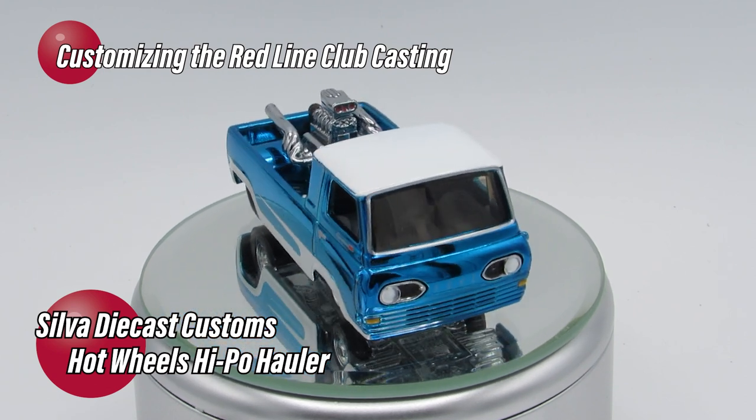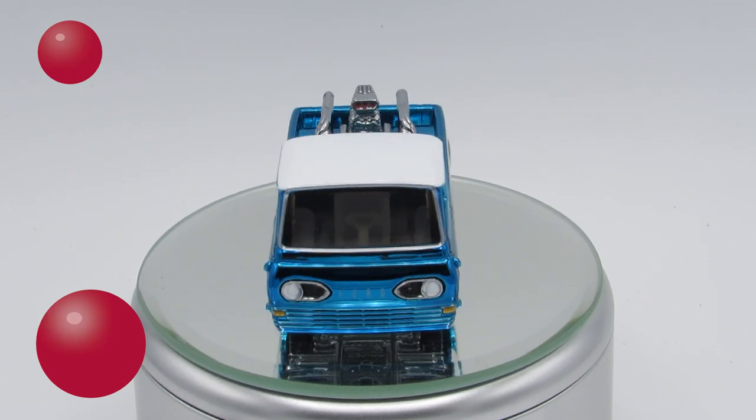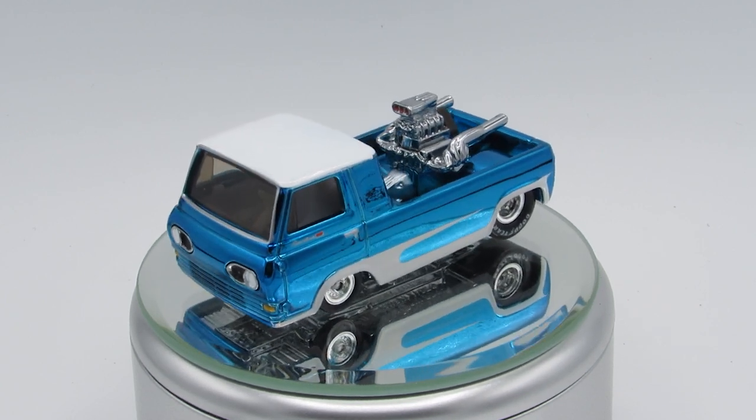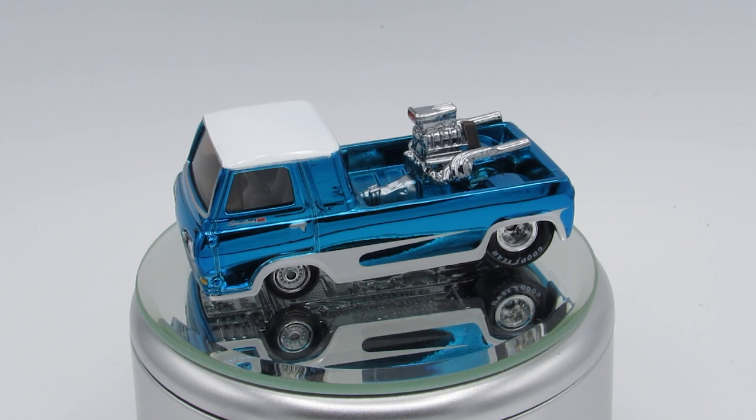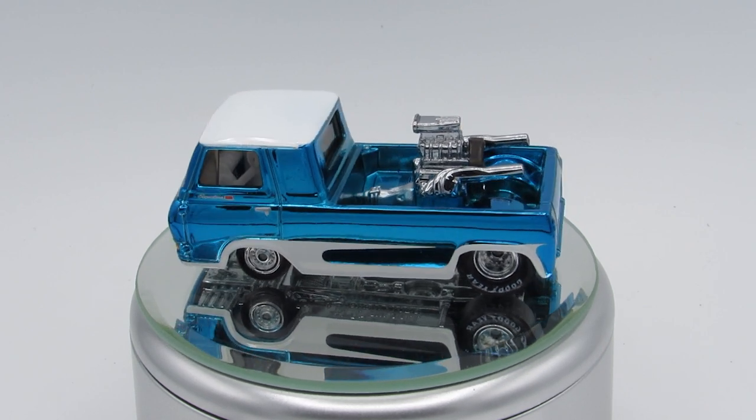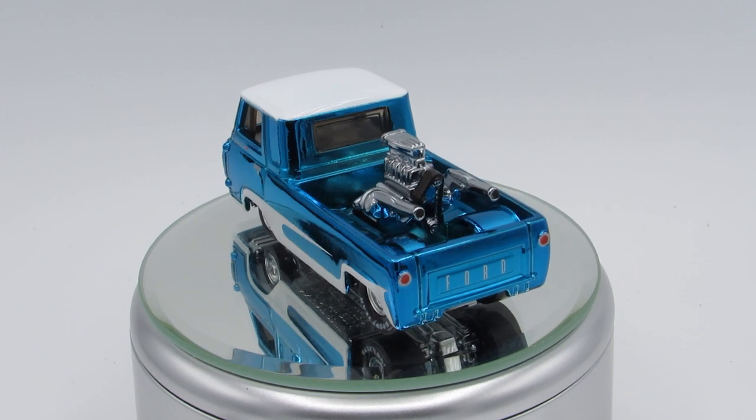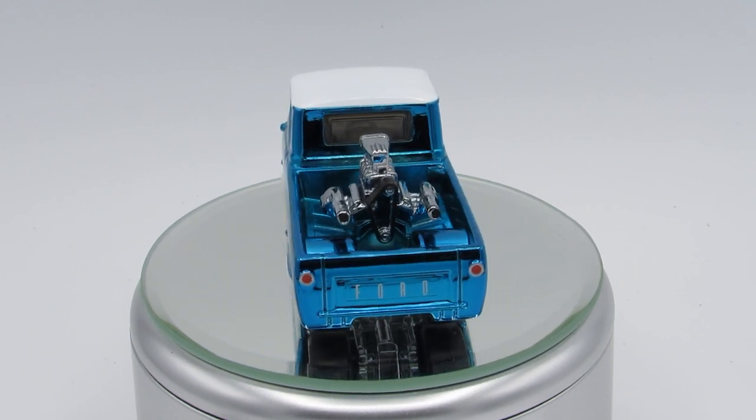This casting is based upon an assignment that was given to Gas Monkey Garage by Mattel to build a car in 10 weeks. They chose the 1964 Econoline truck and turned it into the Hypo or high-performance Holler.